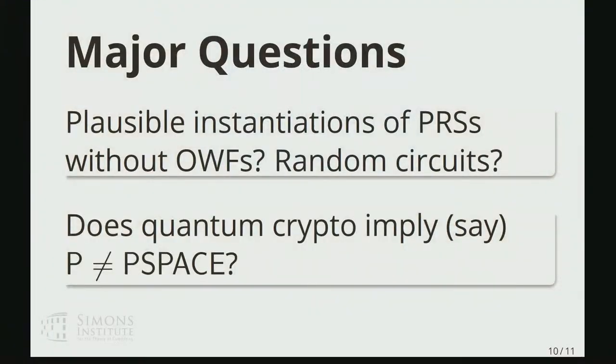And I guess I'll wrap up by just talking about what I think are some of the most important research directions for future work. I think the first one is kind of can we get other plausible instantiations of pseudorandom states that very clearly don't rely on one-way functions in any way? Because, you know, in some sense,